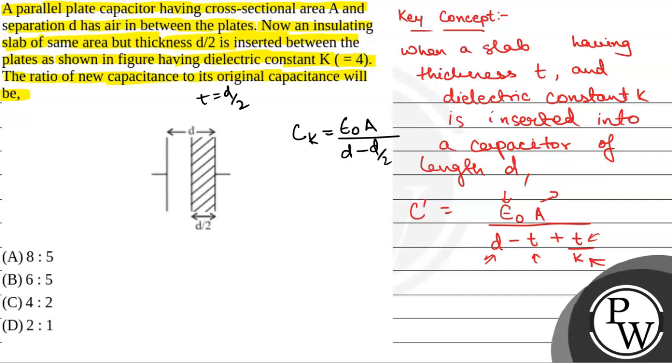So d by 2 divided by 4 equals d by 8. Therefore, ck equals 8 by 5 epsilon 0 a by d.